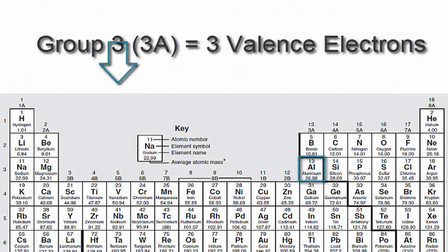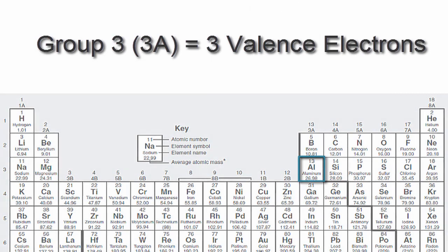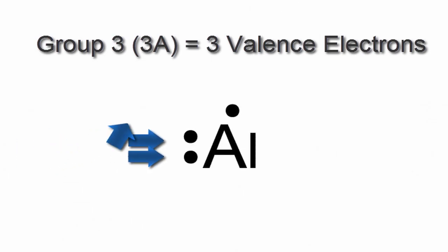Since aluminum is in group 13 or 3A, it has three valence electrons. We put those three valence electrons around the element symbol Al for aluminum.